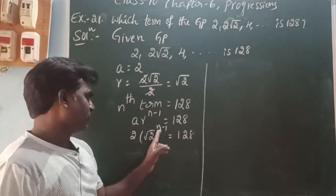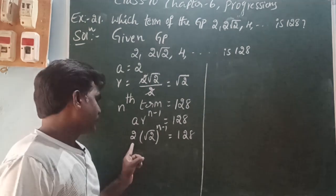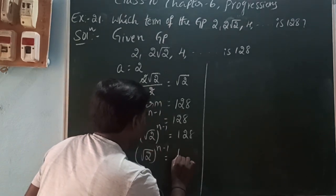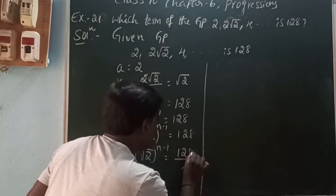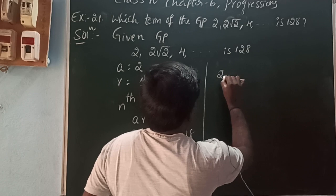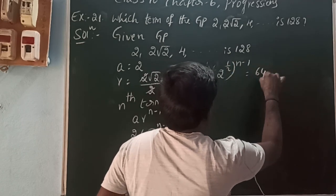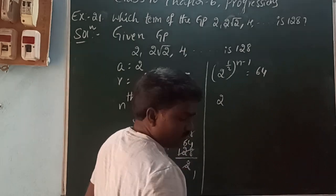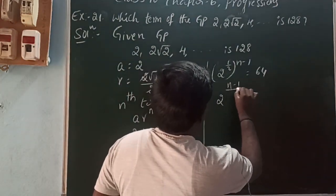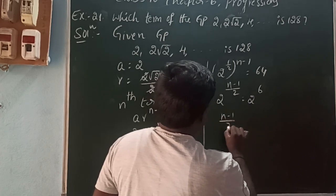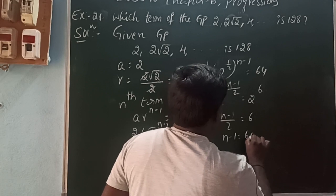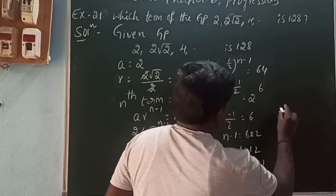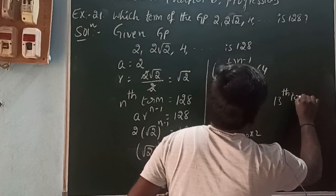Now solving more carefully: 2·(√2)^(n-1) = 128. Moving the 2 to divide the right side: (√2)^(n-1) = 64. Writing √2 as 2^(1/2): (2^(1/2))^(n-1) = 64 = 2^6. Using (a^m)^n = a^(mn): 2^((n-1)/2) = 2^6. So (n-1)/2 = 6, meaning n-1 = 12, and n = 13. The 13th term of the GP is 128.